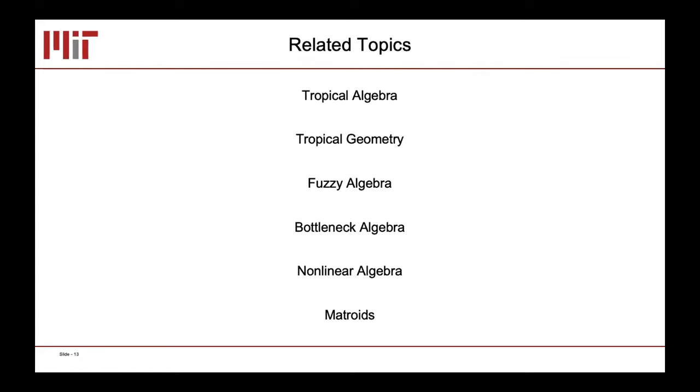I'll wrap up with some related topics. If you're interested in this stuff, there are many related topics you can research. Tropical algebra, tropical geometry - that's whenever you're using max-plus or min-plus. Fuzzy algebra is the general case when you're using max or min as operators. Bottleneck algebra is another name. Interestingly, there's a group in Europe that refers to this as nonlinear algebra. And of course, the theory of matroids, which deals with more general constructs of matrices. Hopefully I didn't use up all my time. Did I use up all my time, John? I'm afraid so, we should move on.